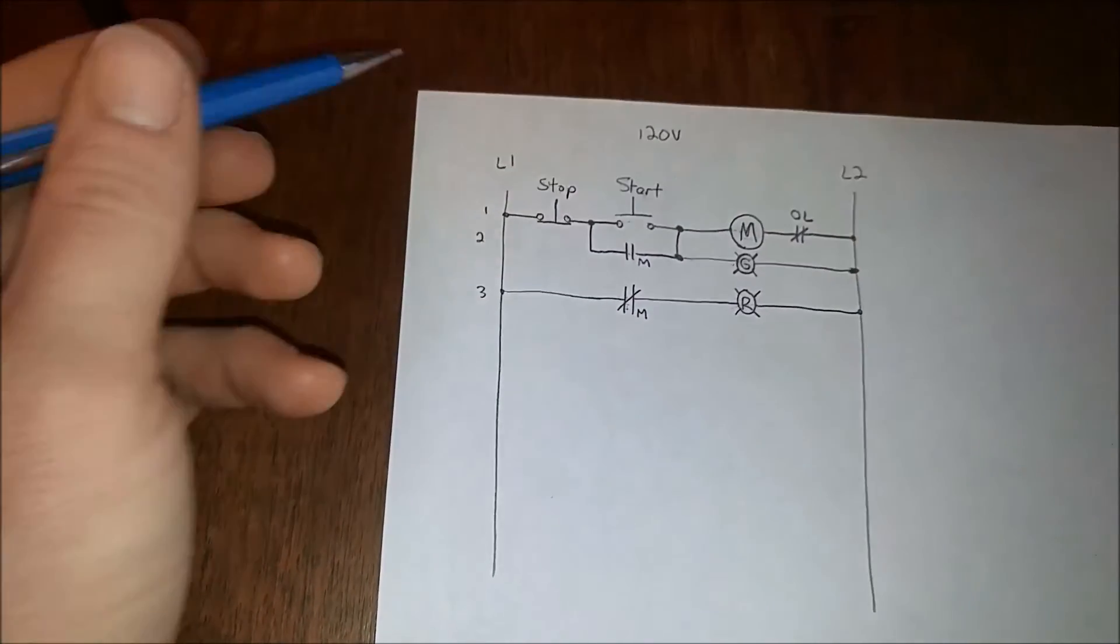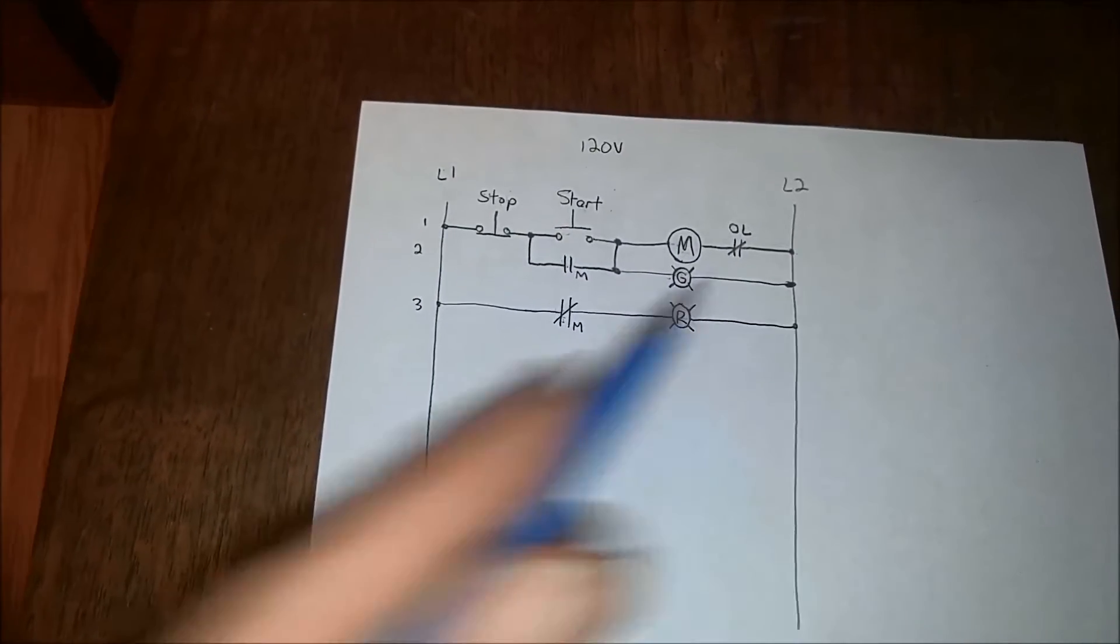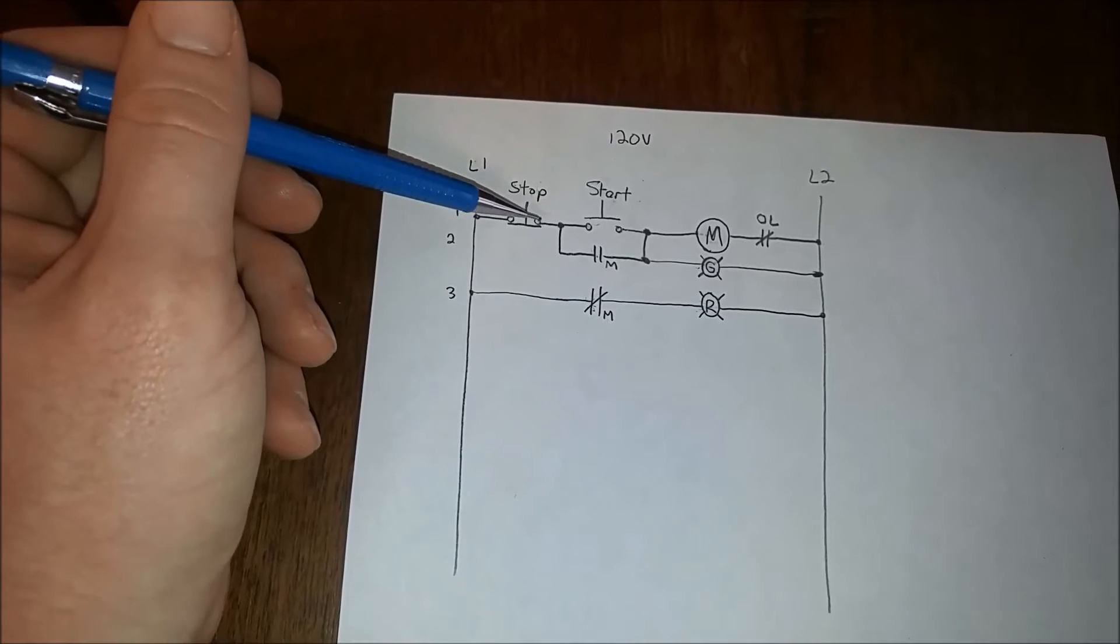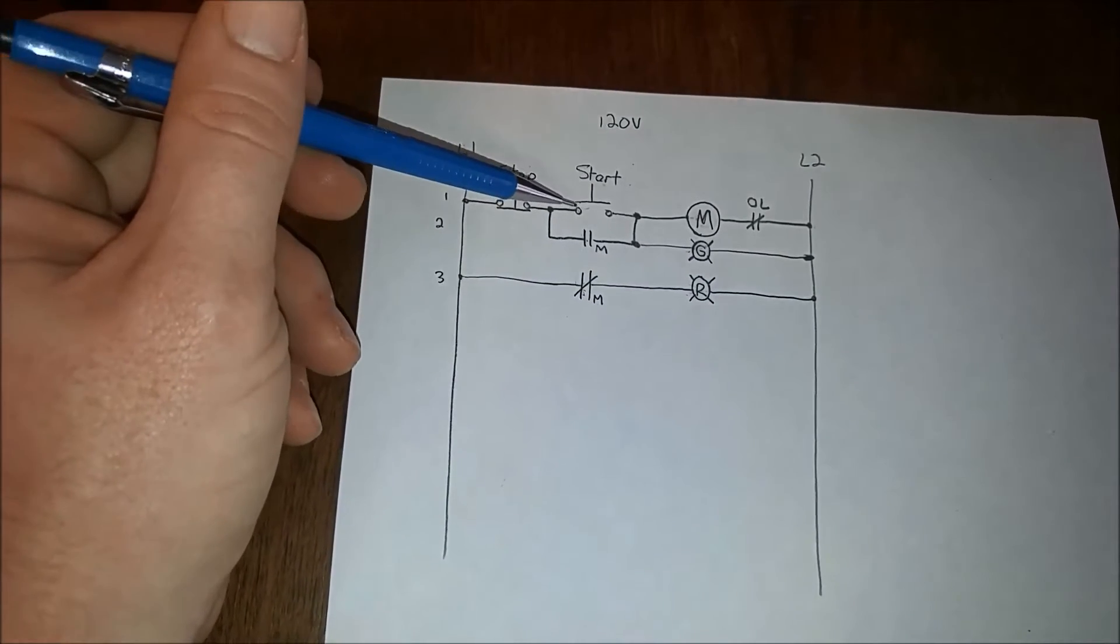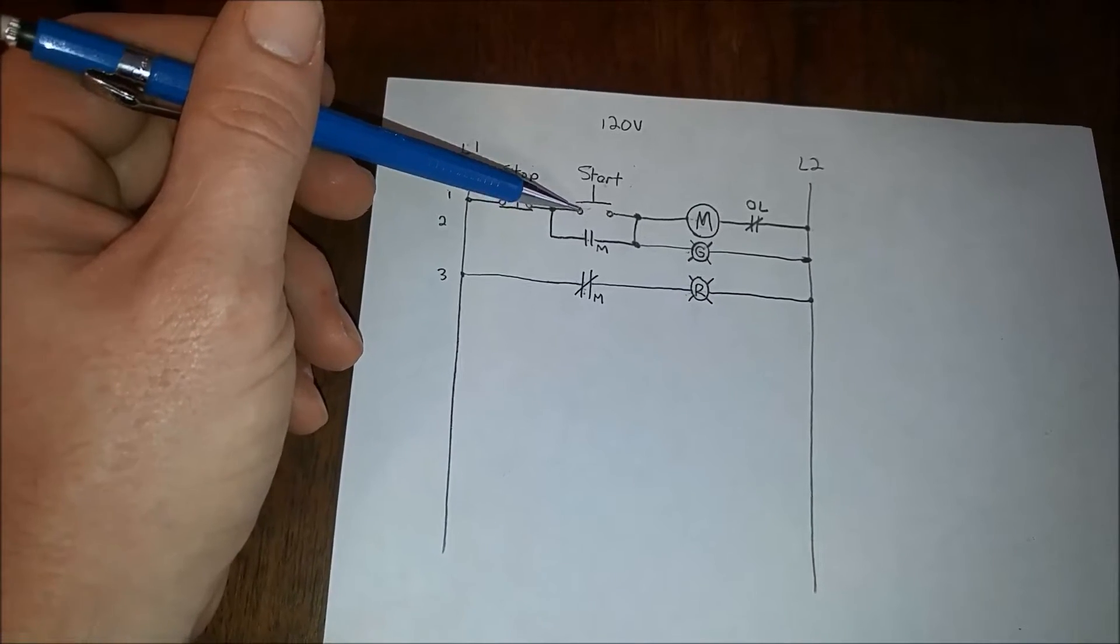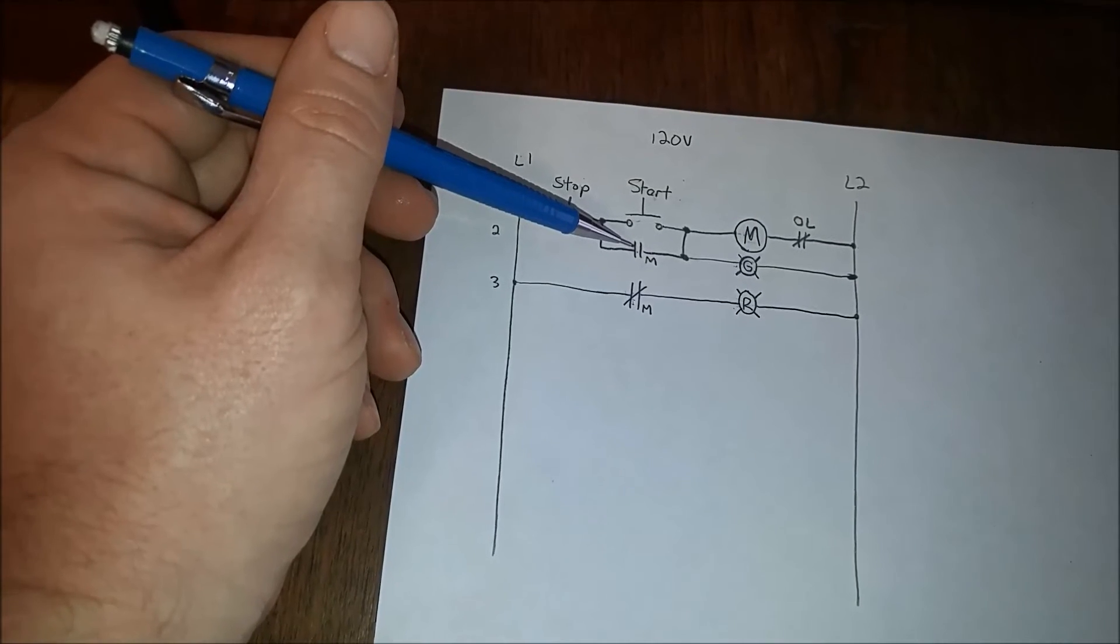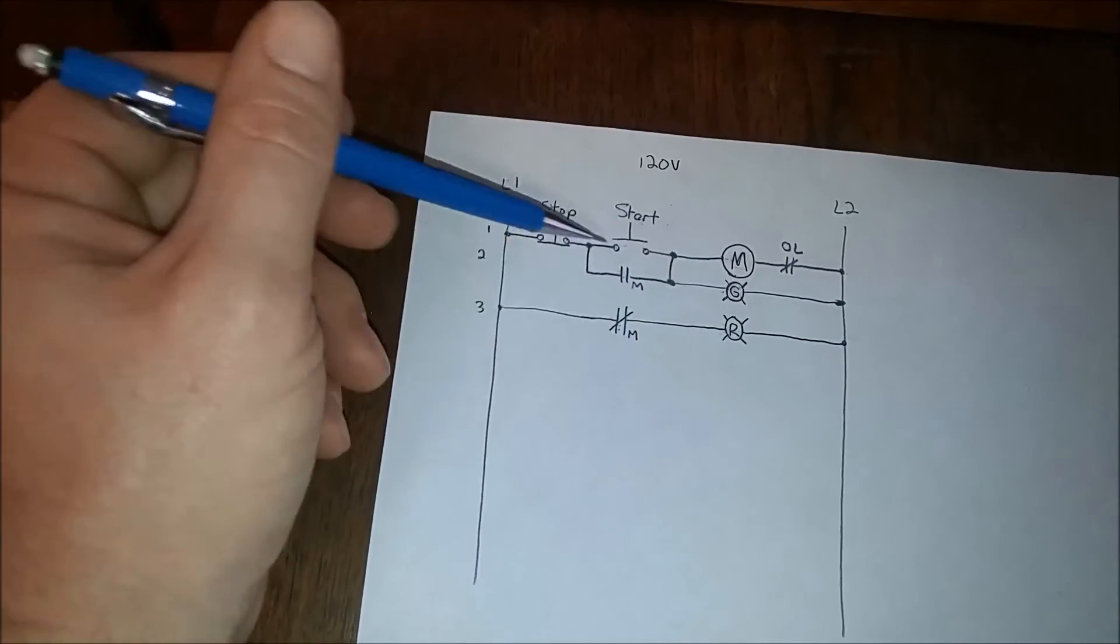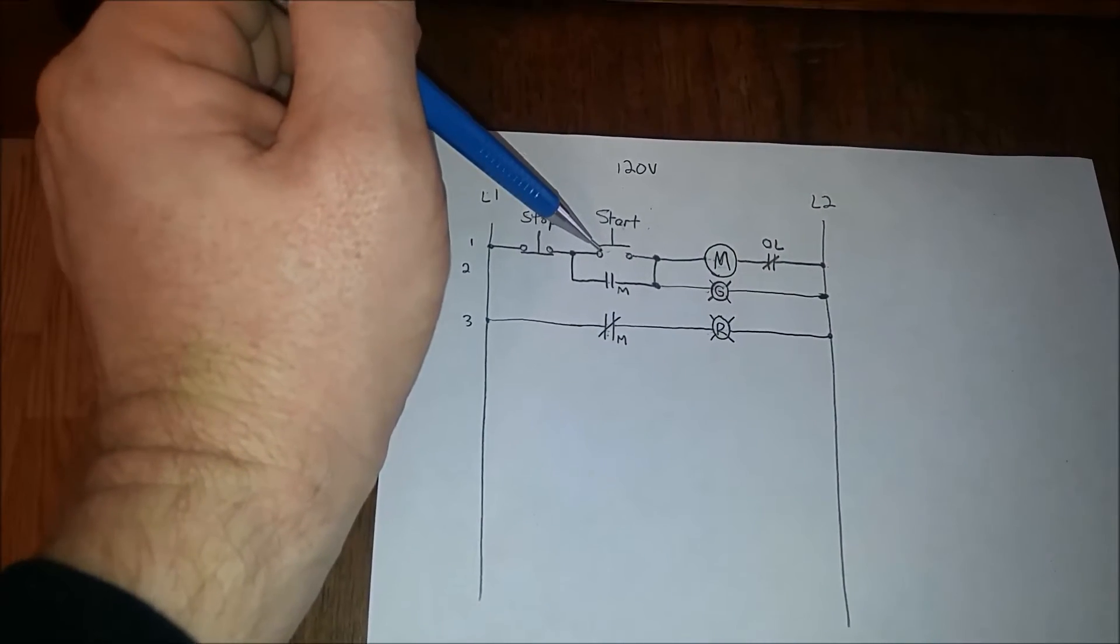The way the circuit works is L1 is your hot and L2 is your neutral. Power comes in here, goes across the normally closed switch, which normally closed means it always conducts. It goes to a normally open start switch which only conducts when you press it down, and that's a normally open auxiliary contact which only conducts when the coil is energized. The power comes through here when you push the button.